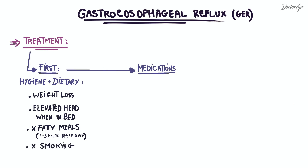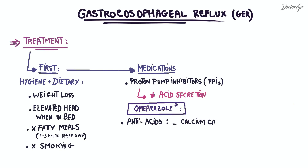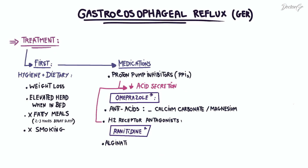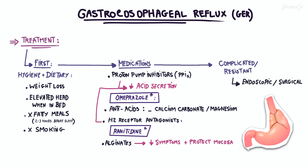Medication treatment includes the use of proton pump inhibitors to reduce gastric acid secretion, with omeprazole being the most commonly used molecule. Antacids like calcium carbonate or magnesium are prescribed in some cases, and H2 receptor antagonists are also used to reduce acid secretion, the most well-known being ranitidine. Alginates are also useful to reduce GER symptoms and protect the gastric and esophageal mucosa. In advanced, complicated, or treatment-resistant cases, endoscopic or surgical options may be considered.